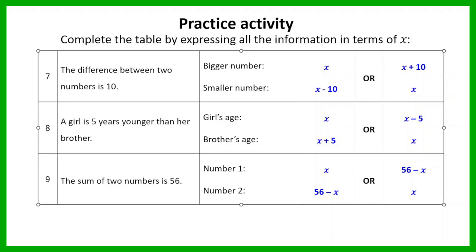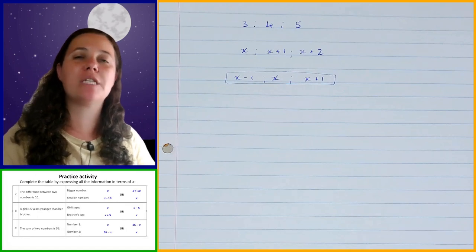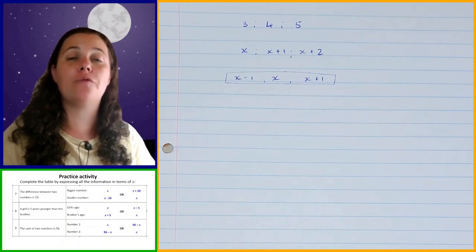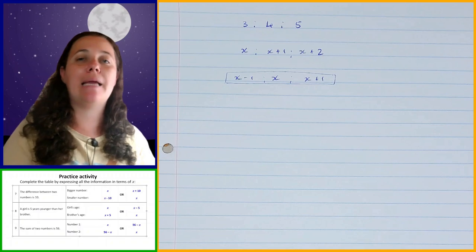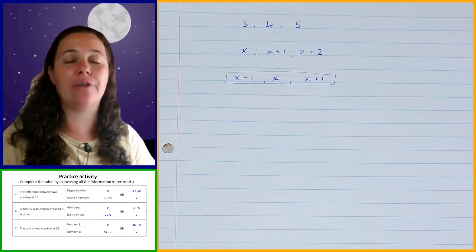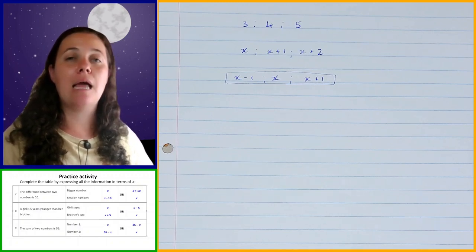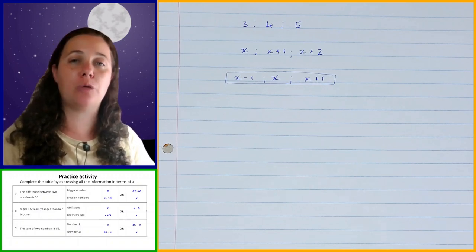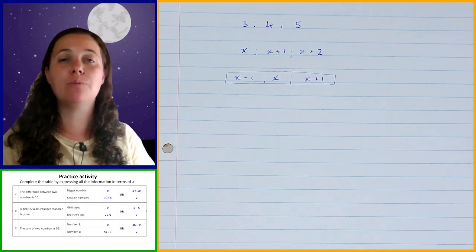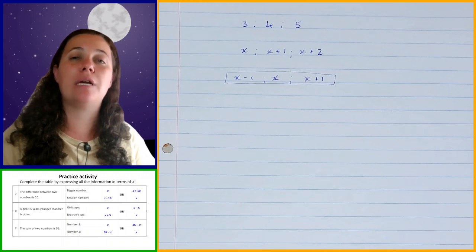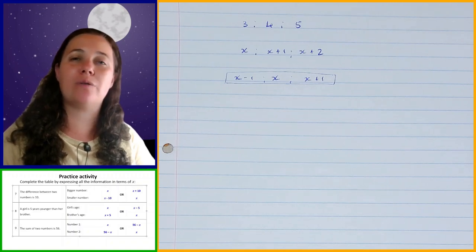Let's do a quick recap. When solving a word problem, express your unknown values in terms of x: make one of them x and write the others in terms of x, as we've been doing. I always recommend making the one you're trying to work out x — with one exception: if there is a fraction or multiple involved, make the smaller value x to avoid fractions, then work out the relevant value afterwards once you have an actual number.